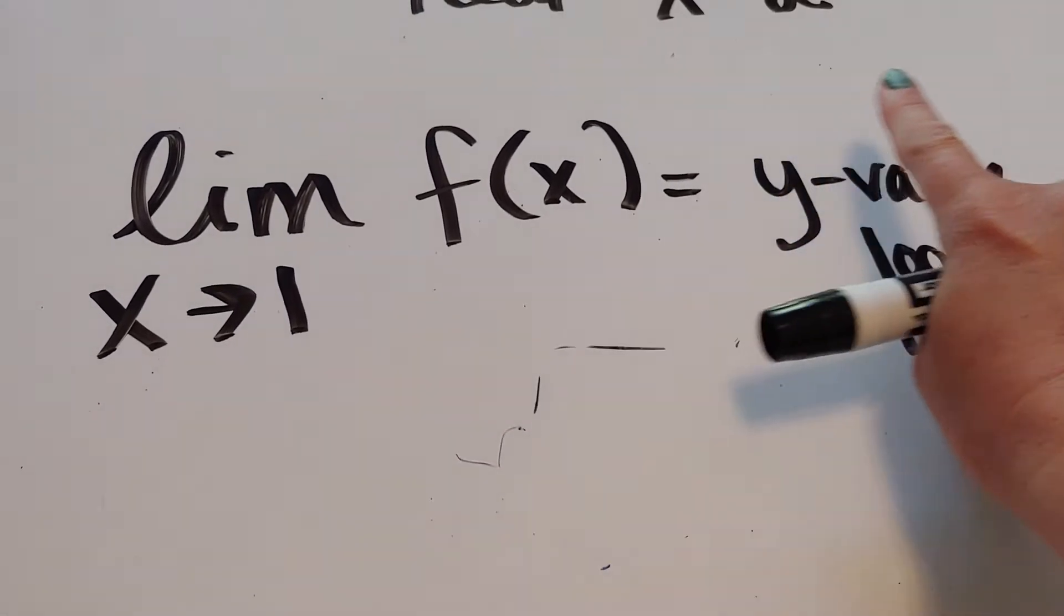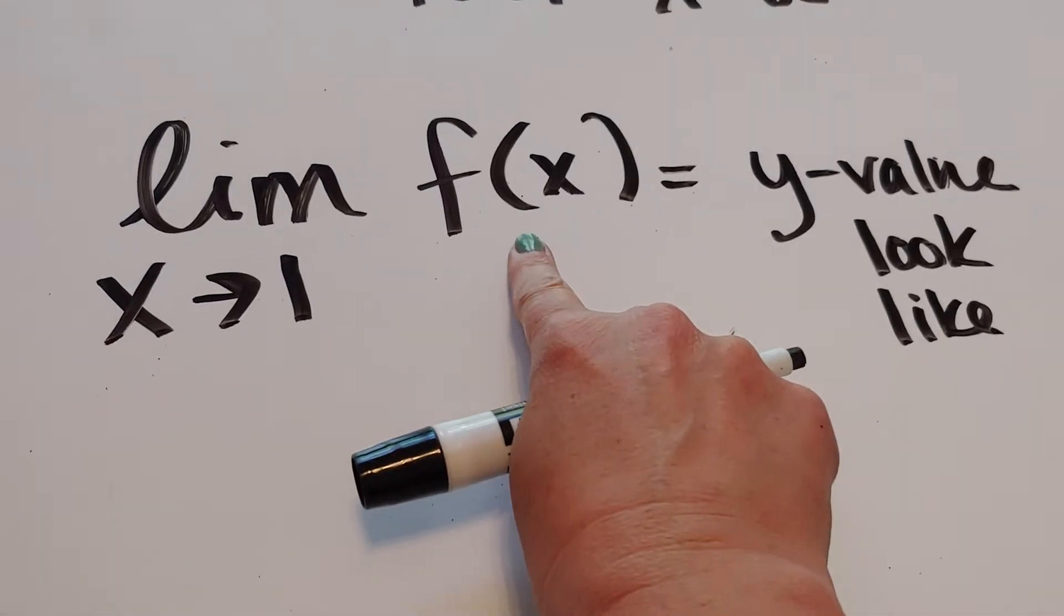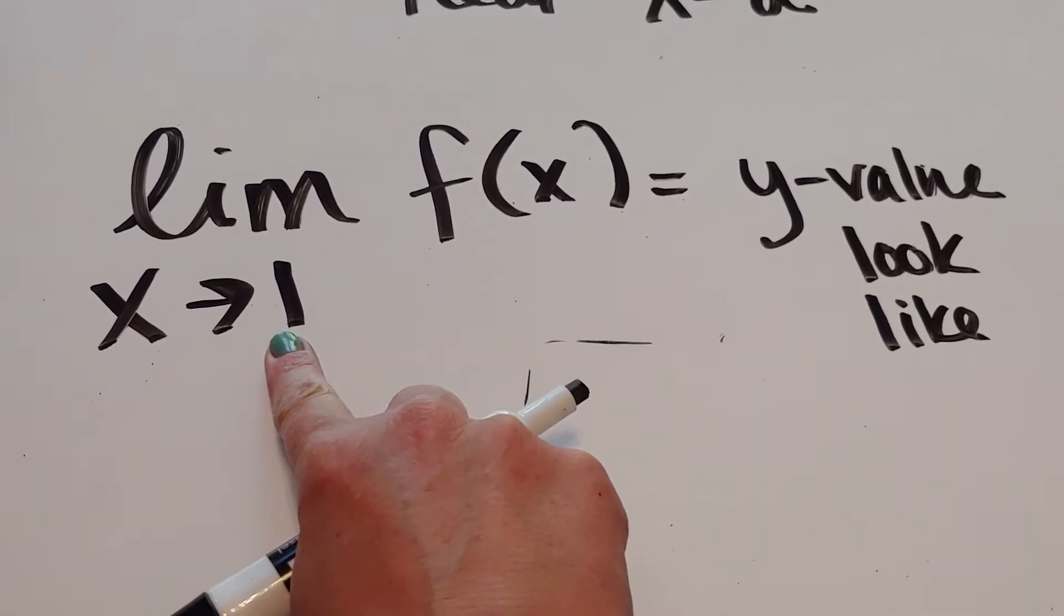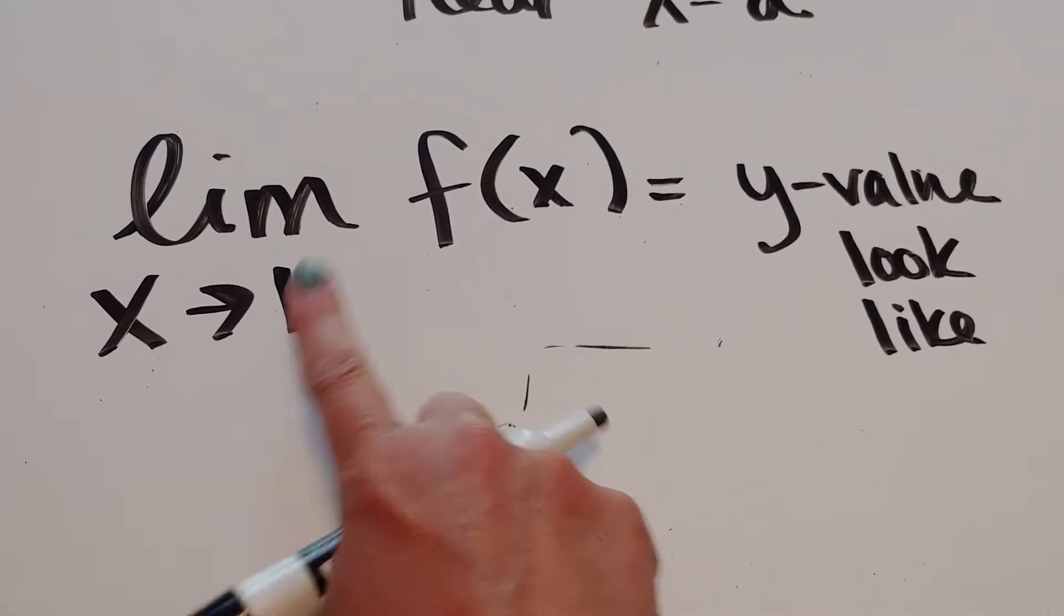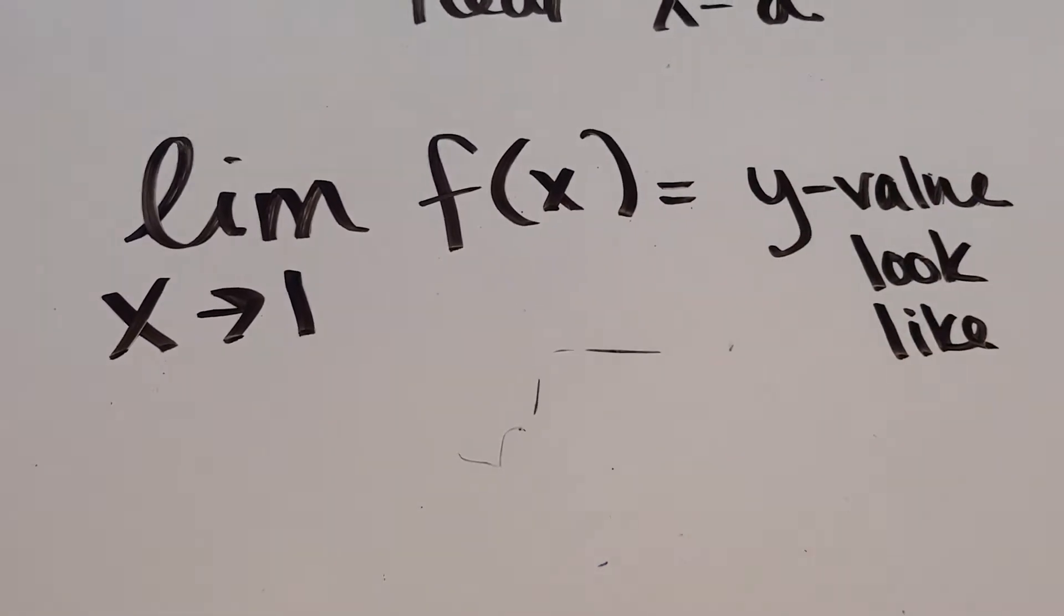Now what happens is it will actually be the y value if the function is continuous at this spot. However, if this is a funky spot, it won't be the y value. So, let me show you what I mean.